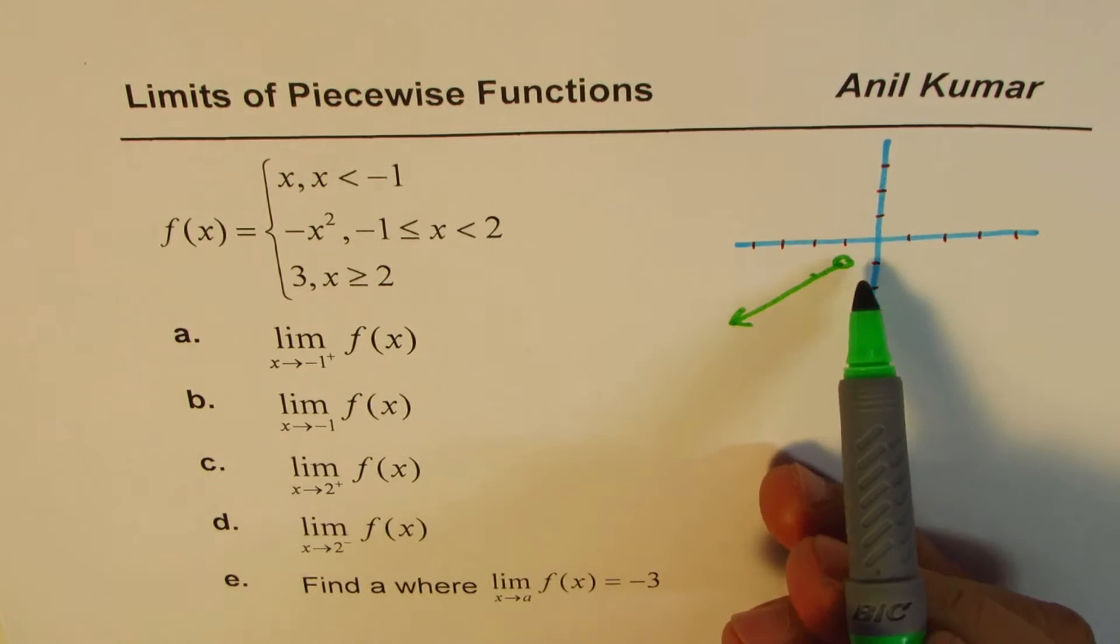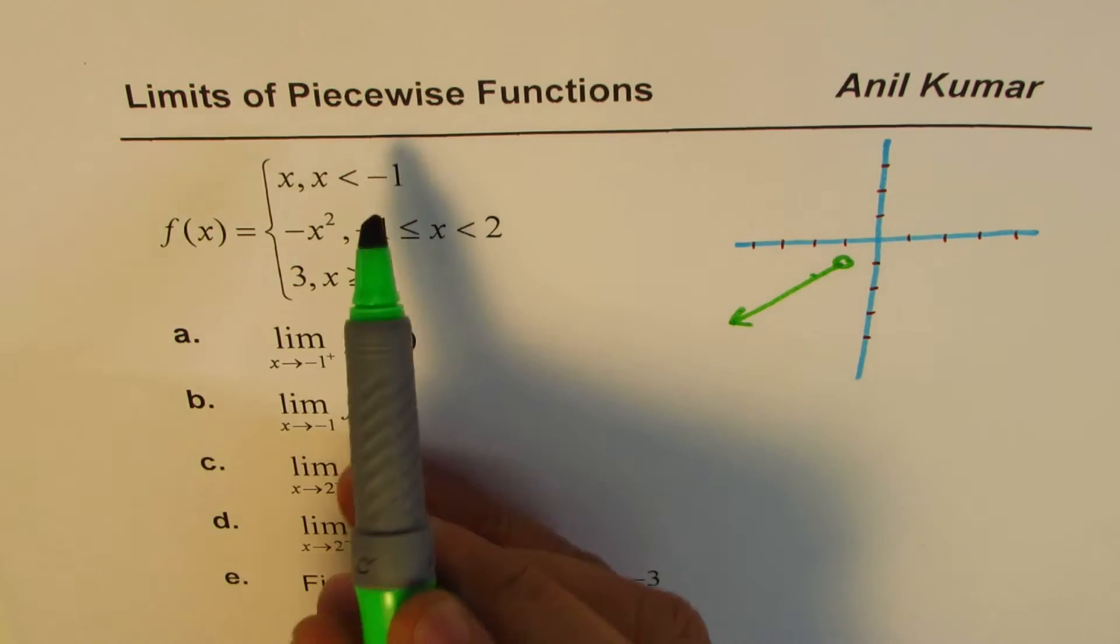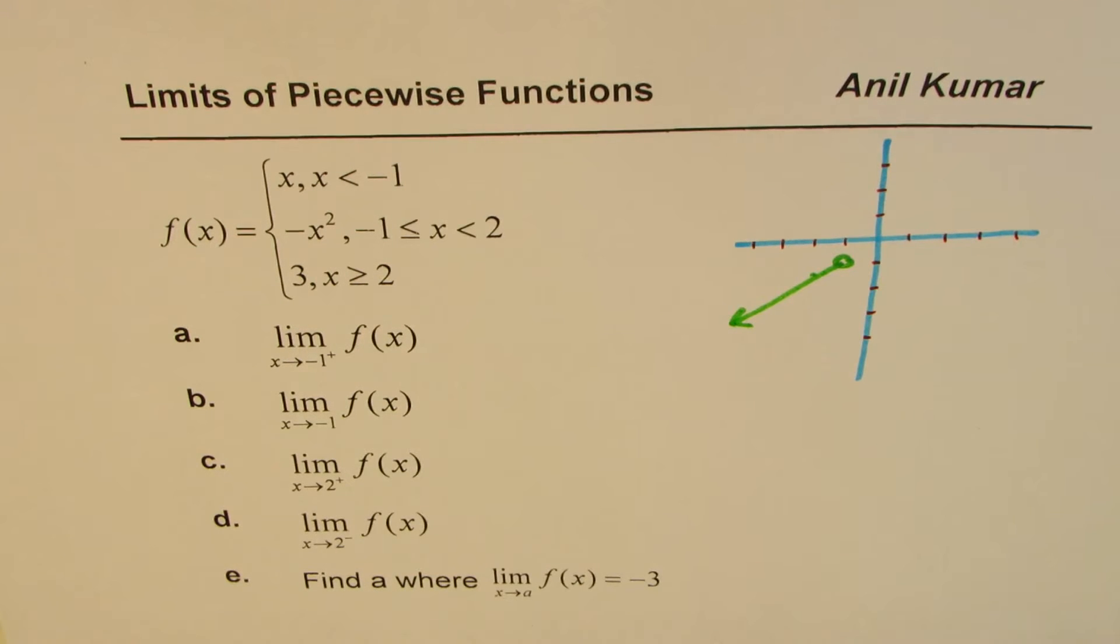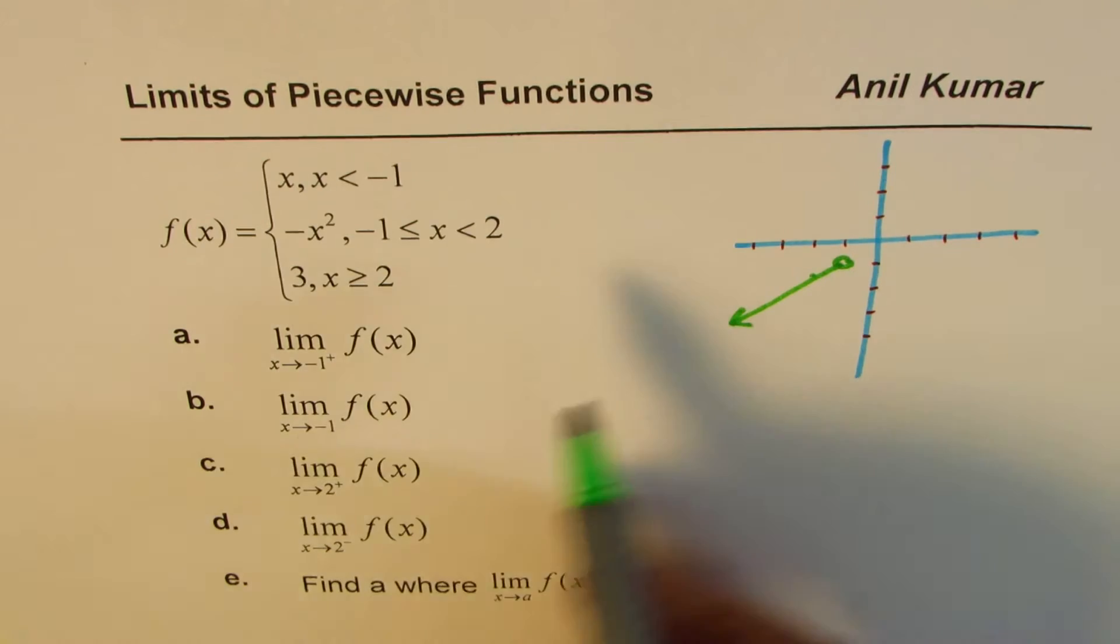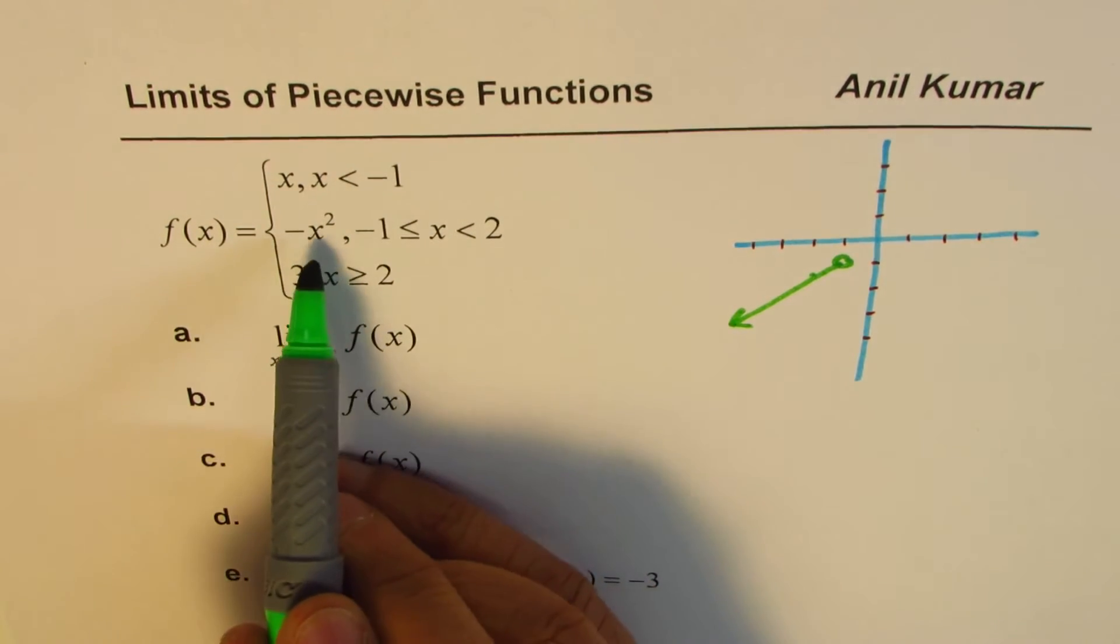So that is where it is and that circle which is not filled indicates that at -1, this function is less than -1. It is not equal to, right? So it is out of its interval. Interval of this function is from -∞ to -1.